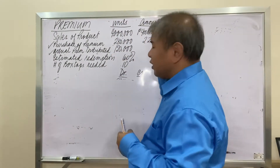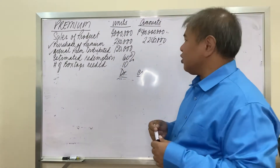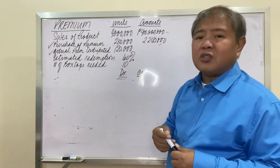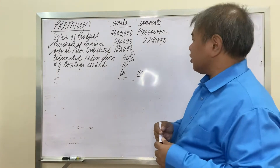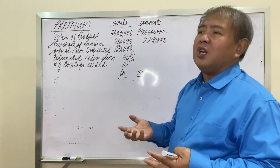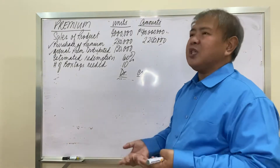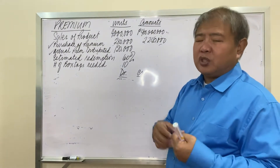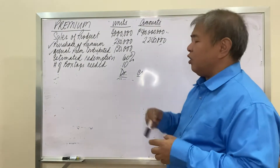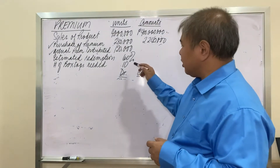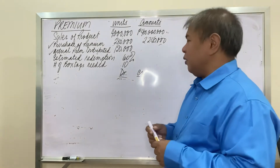So we have here an example. There are 4 million units of products that were sold for an amount of 400 million pesos. The purchased premiums included 280,000 units for a total cost of 2,240,000. There are actual premiums distributed to customers of 120,000 units. Based on historical performance, the estimated redemption rate is 60%, and customers need to present 10 backstops of the item to be entitled to one premium item.